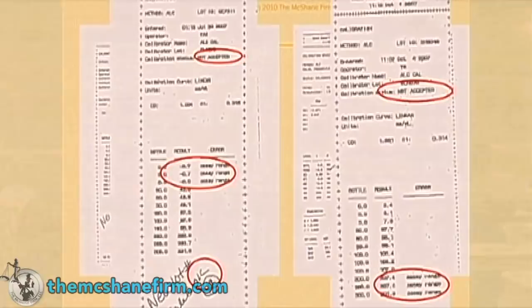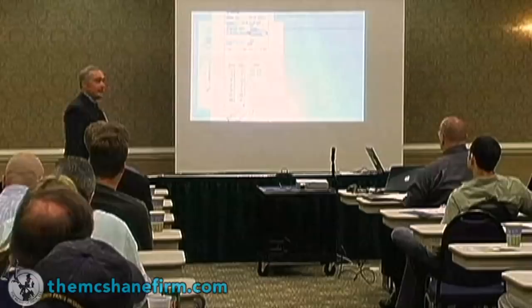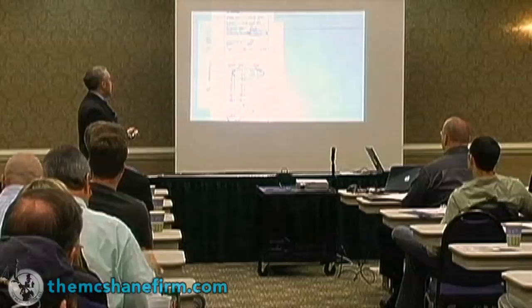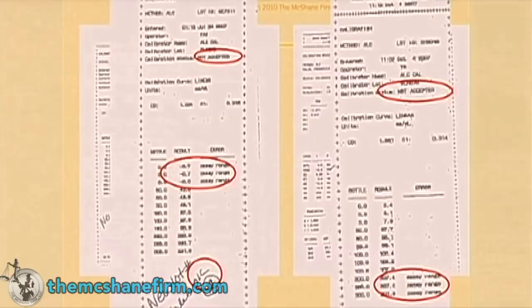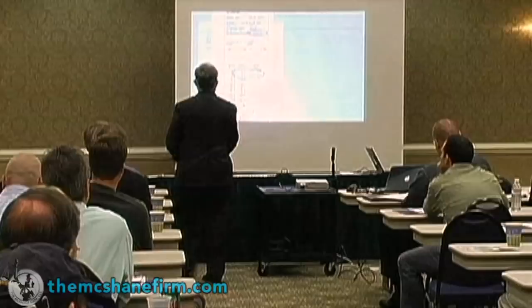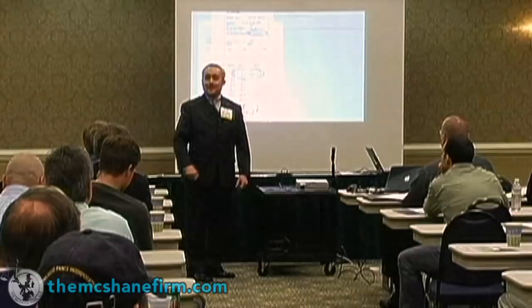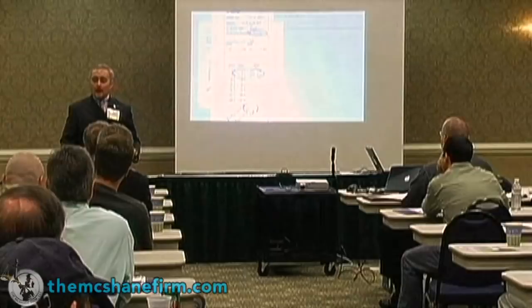Calibration status: not accepted. Who in this room would think that means the thing is okay? You don't need a PhD in analytical chemistry to say if something isn't calibrated, it isn't working right. But then you look a little further down — I didn't know what this meant at first, but I learned. You have negative numbers. If you're measuring alcohol, zero means nothing is there — how can you have a negative value? And it even says right there: 'error assay range.' But the analyst signs off on it anyway.